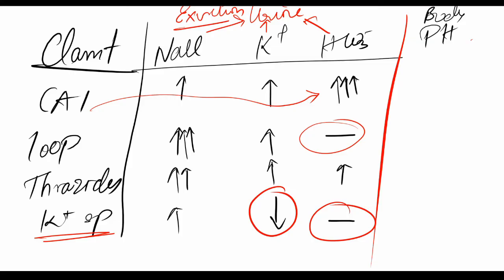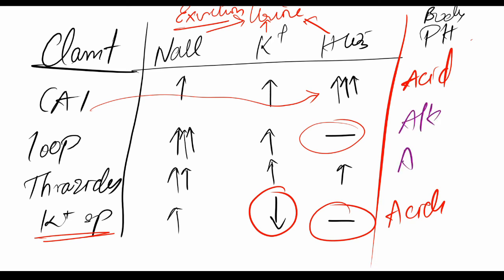If we talk about body pH, we see acidosis in carbonic anhydrase inhibitors and potassium-sparing diuretics, and we see alkalosis in loop and thiazide diuretics. This was the introduction, and in the second part we will continue with carbonic anhydrase inhibitors.